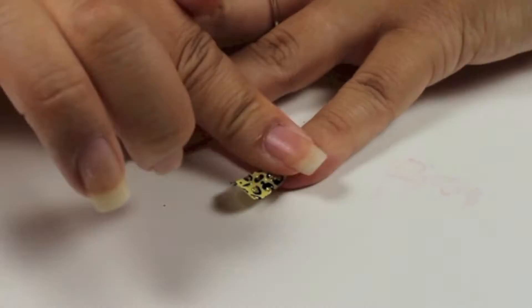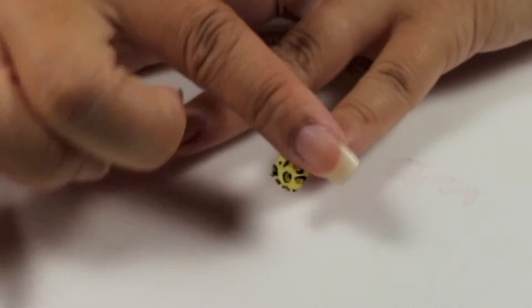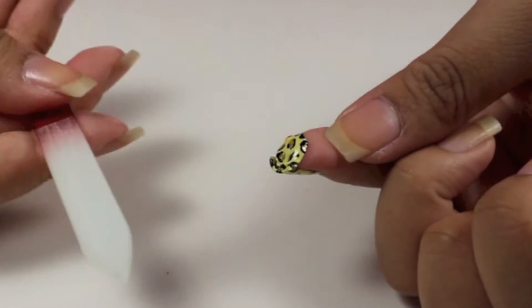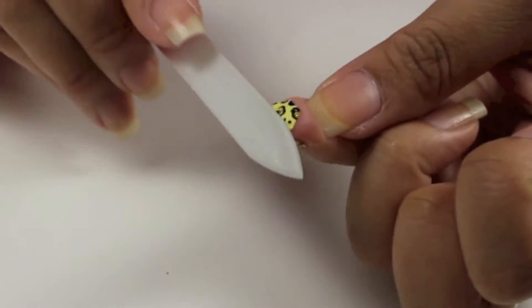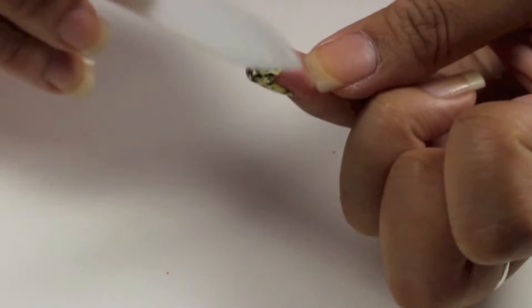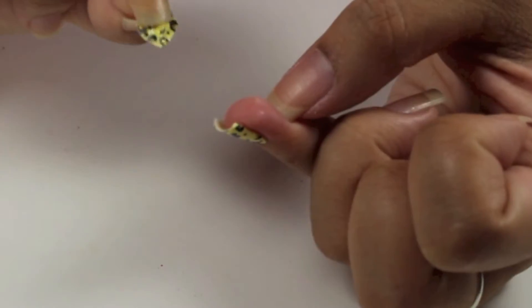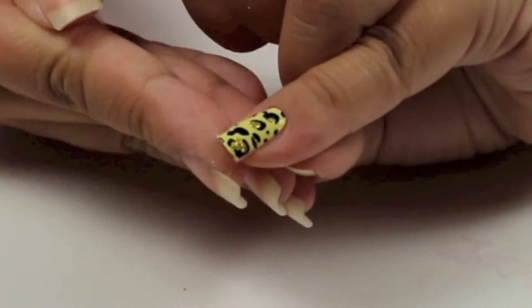Make sure you rub it really good to make the heat of your hands and your finger stick it down. Then I'm going to use a nail file to file off the extra. Then just kind of tuck it under and file again.